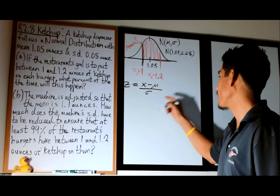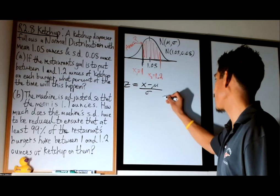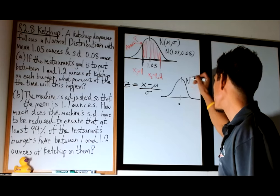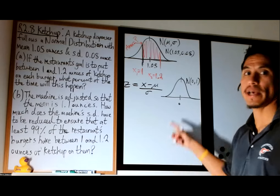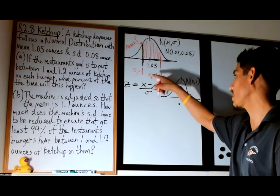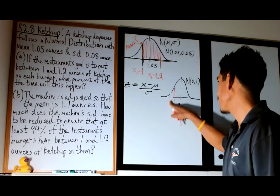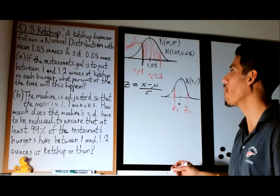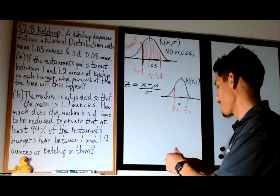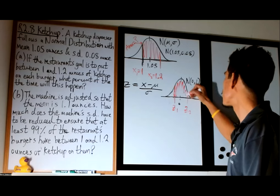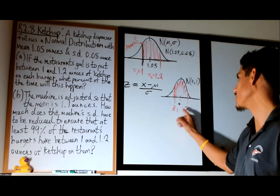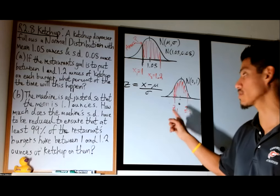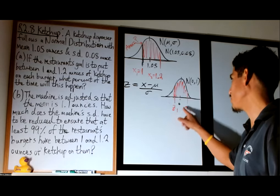What we're essentially trying to find is the area on a normal distribution. Let's draw a smaller standardized normal curve where the mean is 0 and its standard deviation is 1, so N of 0 comma 1. We have two z values that correspond to these x values that will give you the same area between them. Let's call those z1 and z2.